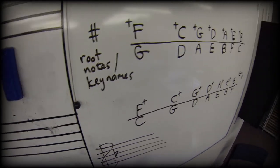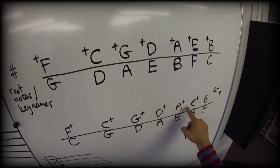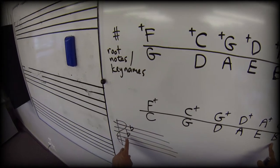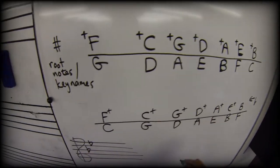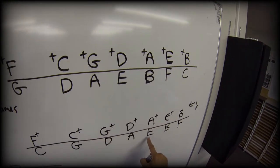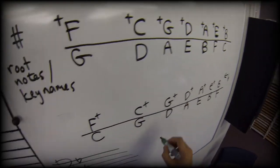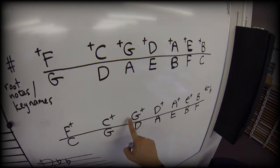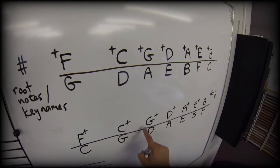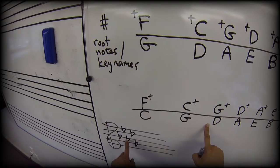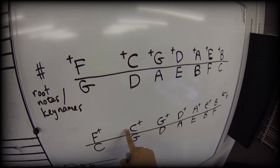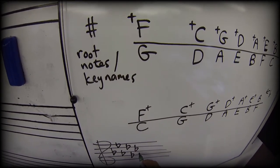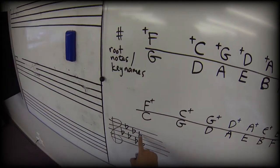I'll make B flat major. If I add an A flat, I'll make E flat major. If I add a D flat, I'll make A flat major. If I add a G flat, I'll make D flat major. If I add a C flat, I'll make G flat major. And finally, if I add an F flat, I'll make C flat major.